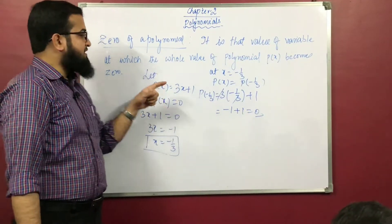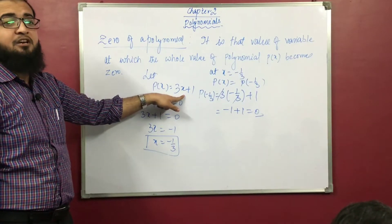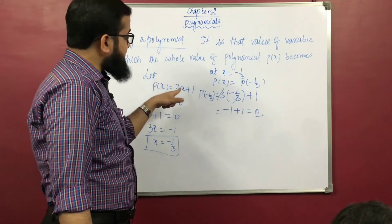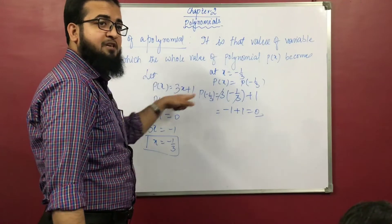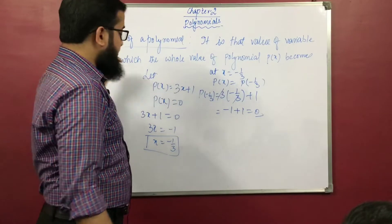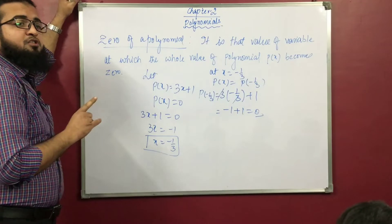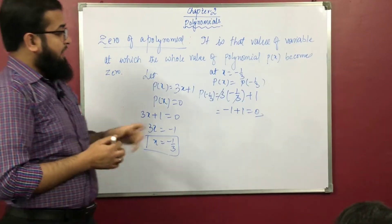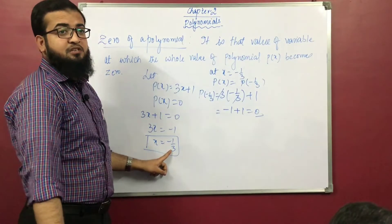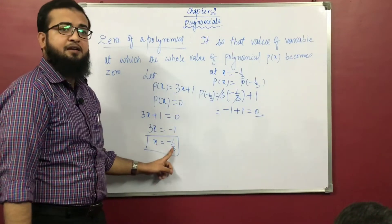This was a linear polynomial, so there is only one such value possible at which it becomes 0. There is only one possible value of x at which the whole polynomial px becomes 0, because it is a linear polynomial. Other than minus 1 upon 3, there is no value at which it will become 0. Any other value you put, 0 will not come.